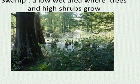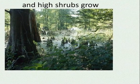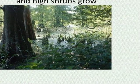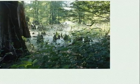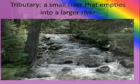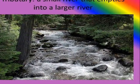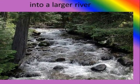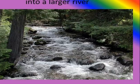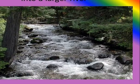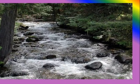A swamp is a low, wet area where trees and high shrubs grow. A tributary is a small river that empties into a larger river.